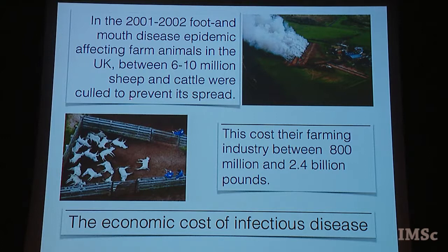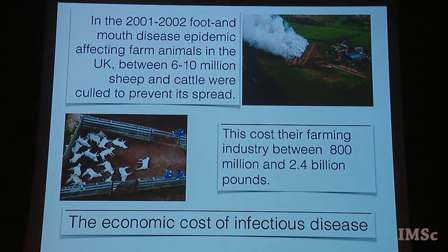There are also very important economic costs of infectious diseases. In the 2001-2002 foot-and-mouth disease epidemic affecting farm animals in the UK, they had to cull six to ten million sheep and cattle, costing the farming industry somewhere between 800 million and 2.4 billion pounds. In a country like India where cattle farming is often marginal, you can see how important those economic costs would be. It's important that people who work on public health and epidemiology are aware of the many components: a medical component, an economic component, a human component, a social component — which is what makes these problems very interesting to think about.